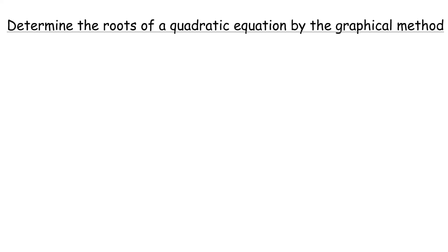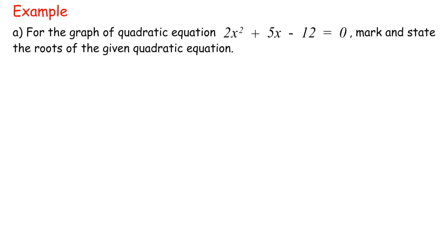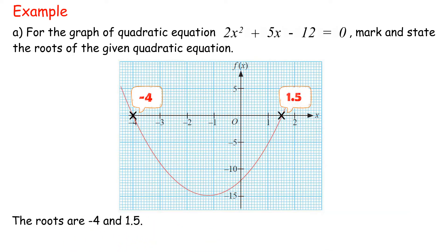Determine the roots of a quadratic equation by the graphical method: read the values of x which are the points of intersection of the graph and the x-axis. For instance, the roots are negative 1 and 3 in this diagram. Example A: for the graph of quadratic equation 2x² plus 5x minus 12 equals 0, mark and state the roots of the given quadratic equation. The roots are negative 4 and 1.5.